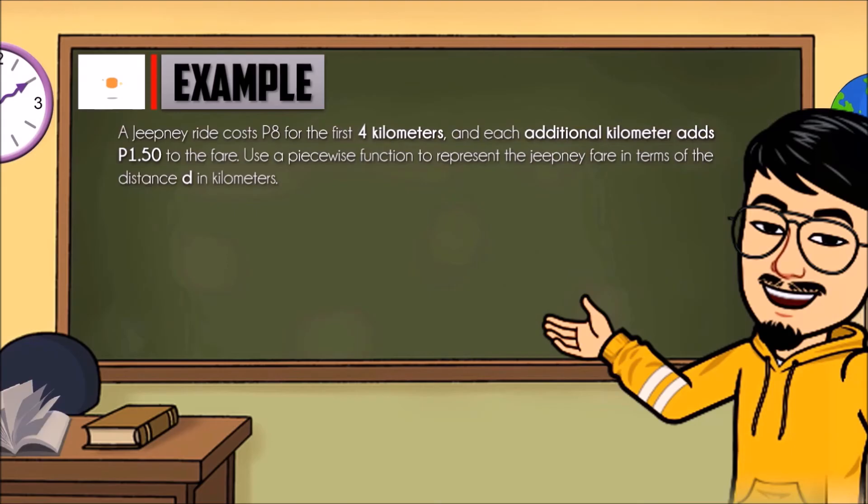Represent the fare as F in terms of D. In this example, there are two conditions. First condition: F of D equals 8 if the distance is less than or equal to 4.